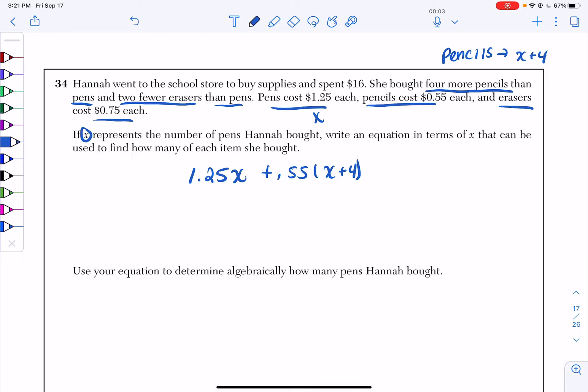Now, we bought erasers too. She bought two fewer erasers than pens. That's a subtraction, so that's an X minus 2. But we know erasers cost $0.75 each, so I have plus 0.75 times X minus 2 equals 16, because she only spent $16.